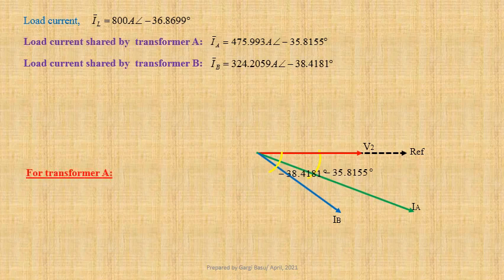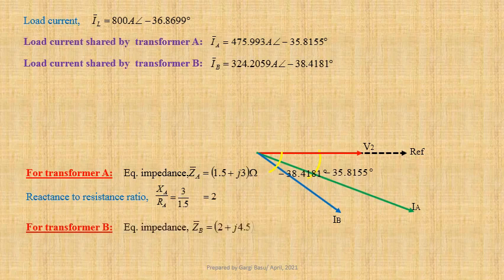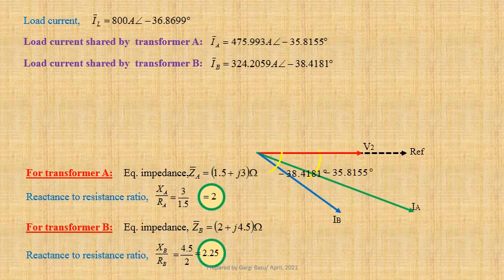For transformer A, given equivalent impedance ZA equals 1.5 plus J3 ohm. Reactance to resistance ratio XA by RA equals 3 by 1.5, that is equal to 2. For transformer B, given equivalent impedance ZB equals 2 plus J4.5 ohm. Reactance to resistance ratio XB by RB equals 4.5 by 2, that is equal to 2.25. Since these two transformers have different reactance to resistance ratios, the currents IA and IB are at different phases, and the transformers are operating at different power factors.